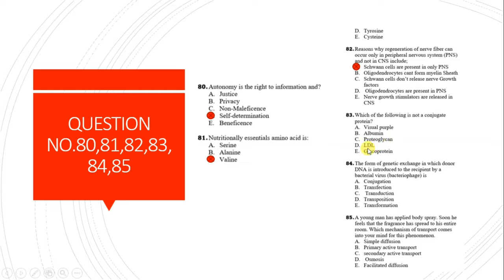Question 83: Which of the following is not a conjugated protein? Albumin is not a conjugated protein - it is a simple protein. Visual purple, proteoglycan, LDL, and glycoprotein are conjugated proteins.